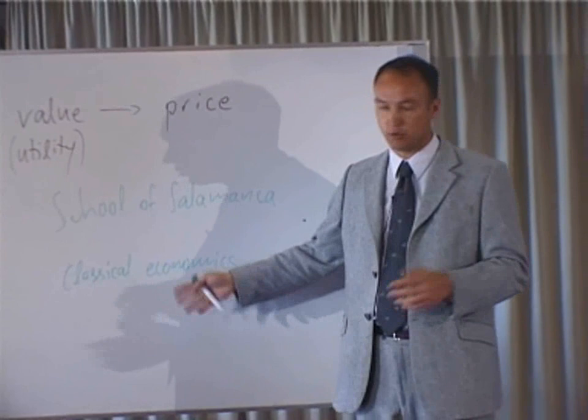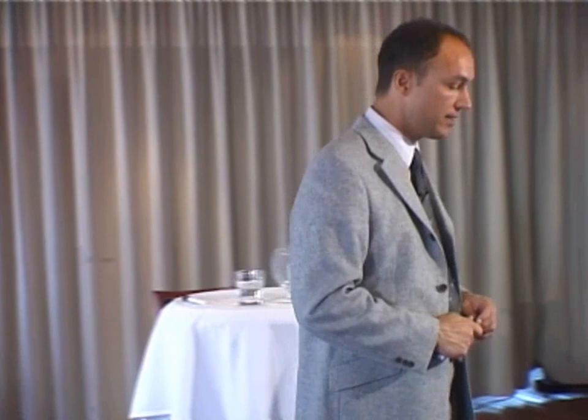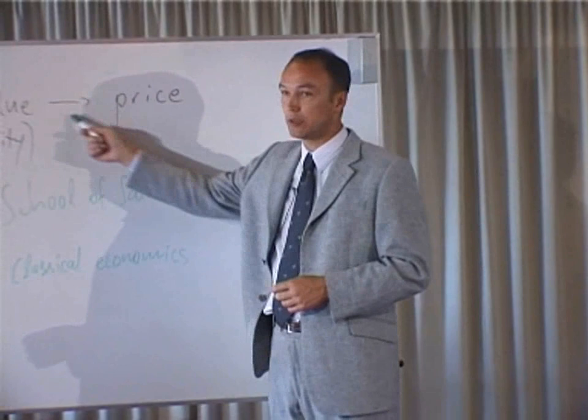Even the classical economists — including Jean-Baptiste Say and David Ricardo — never abandoned the notion that the ultimate foundation for prices is to be found in utility, that is, in the contribution an object makes to human welfare. But they could not explain how this link would work out, in particular because they believed there was a paradox, what has been called the classical paradox of value.